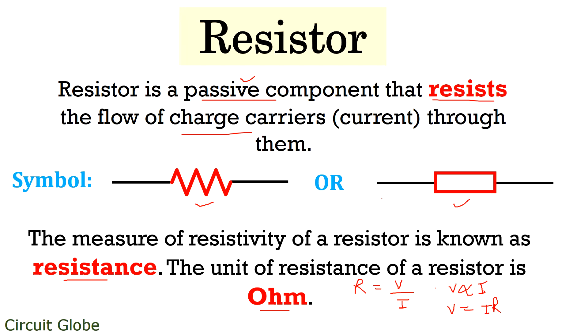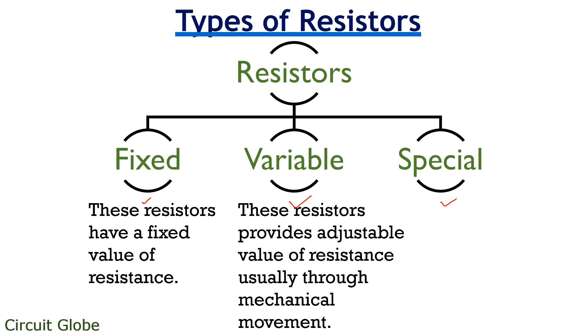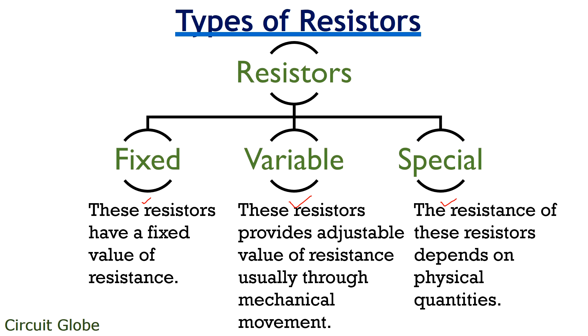Let's now understand what are the types of resistors. So resistors are mainly classified into three categories: fixed type, variable type, and special type. Fixed type resistors are very common as they have fixed value of resistance whereas a variable type resistance provides adjustable value of resistance. And this adjustable value is usually provided through mechanical movement. Potentiometer and rheostat are the example of variable type of resistors. While special type of resistors are those whose resistance depends on physical quantities like LDR, VDR, thermistors, etc.